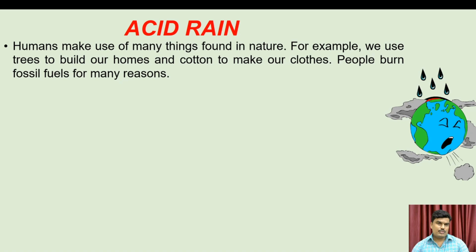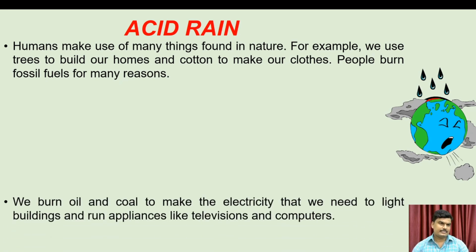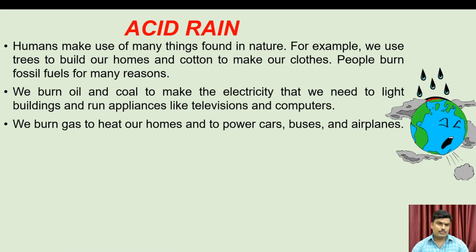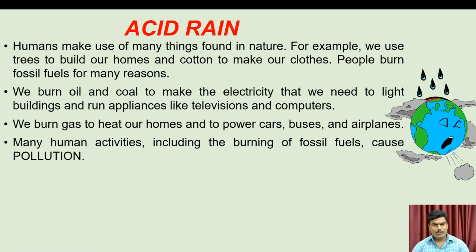Humans make use of many things found in nature. For example, we use trees to build our homes and cotton to make our clothes. People burn fossil fuels for many reasons. We burn oil and coal to make electricity that we need to light buildings and run appliances like televisions and computers. We burn gas to heat our homes and to power cars, buses and airplanes. Many human activities, including the burning of fossil fuels, cause pollution.